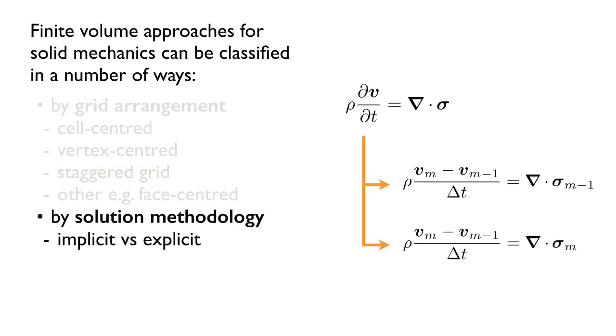Another way to classify finite volume methods for solid mechanics is by solution methodology. For example, we could compare implicit versus explicit. So this is the momentum equation, a generalization of Newton's second law. It says the sum of the forces, or surface forces on the right, equals mass by acceleration. The surface forces could be evaluated at the new, unknown time instant or the previous time instant. This would be explicit, whereas this would be implicit. There's different characteristics of methodologies that use either of these approaches.